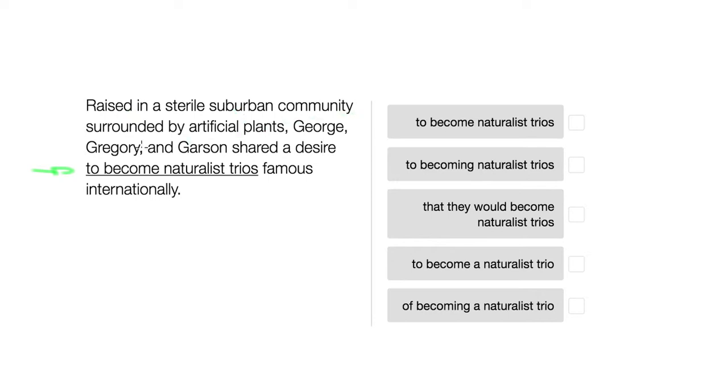Raised in a sterile suburban community surrounded by artificial plants, George, Gregory, and Garson shared a desire to become naturalist trios famous internationally. So the idea is that all three of these people are going to form a group of three that is going to be famous internationally.